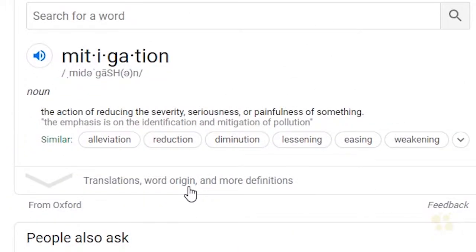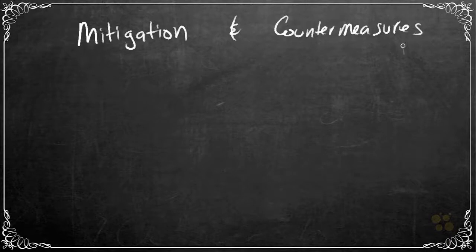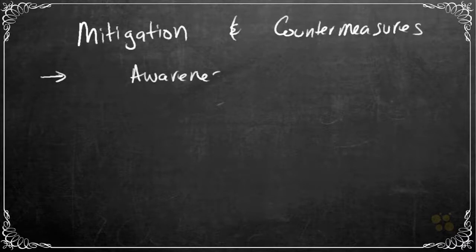Let's start with Webster's Dictionary: the definition of mitigation is the action of reducing the severity, seriousness, or painfulness of something. So if we wanted to lessen the pain of a security incident or vulnerability, or put in a countermeasure to compensate for an existing vulnerability so it cannot be exploited, one of the biggest challenges we face is awareness — awareness of what we need to protect or put additional countermeasures in place for.